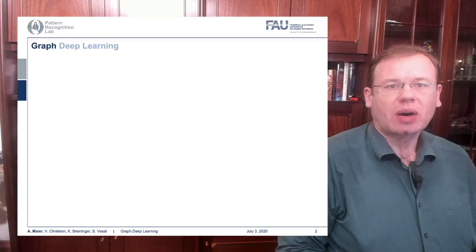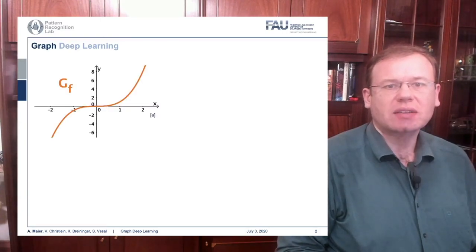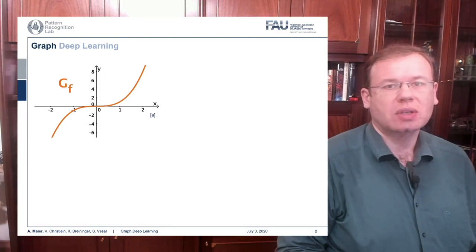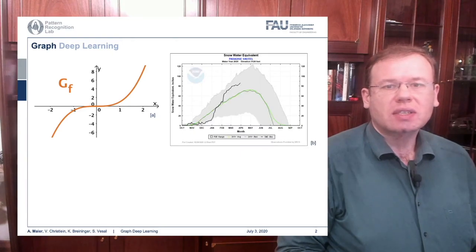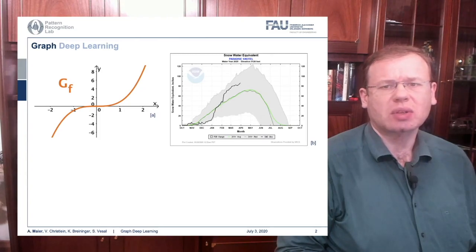What's graph deep learning? Well, you could say this is a graph — we know from math that we can plot graphs — but this is not what we're going to talk about today. Also, you could say a graph is like a plot like this one, but these are also not the plots that we want to talk about today.